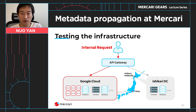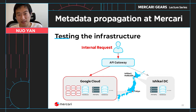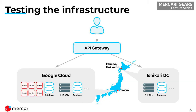However, what this diagram may not illustrate is the complexity. Remember, I mentioned that we have more than 200 services and they have very complex interactions. A request may come to the API gateway and then go to service A, service B, and then that will talk to the PHP APIs. So only having the API gateway knowing the information about where it should go is not enough.